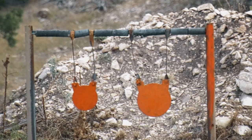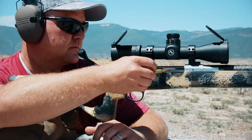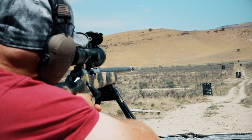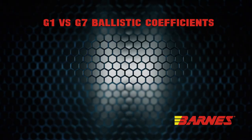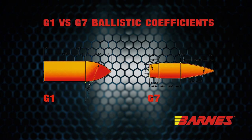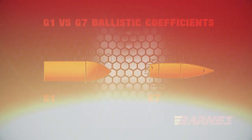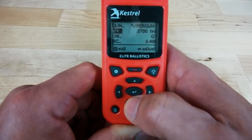A high BC bullet is going to have higher retained energy, less wind drift, and less bullet drop. When talking ballistic coefficient, there are two common drag standards: G1 and G7. A G1 BC is referenced to a projectile that has a fairly blunt shape with a flat base. A G7 fits more sleek match bullets that have a longer sleek nose and feature a boat tail. When entering that into your ballistic calculator, you want to make sure you select the right drag curve for your bullet.